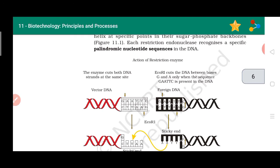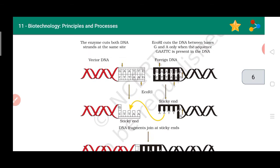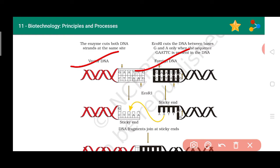Here is the action of restriction enzymes — how they work. Two DNAs are taken: one is vector DNA and the other is foreign DNA, meaning the desired DNA that is needed. The same enzyme — restriction enzyme EcoR1 — is used to cut both. EcoR1 always cuts between G and A, and its cutting pattern is like the letter Z.